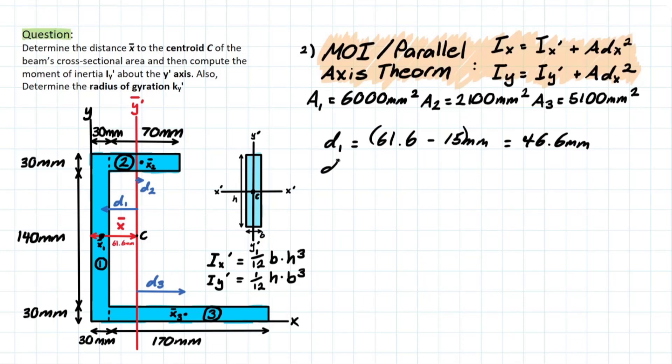It's a pretty similar process for D2 and D3. So for D2, what we're going to do is take that centroid that we calculated previously, which is 65 from Y to that point, and then subtract that distance from Y to the centroid that we found before. And this will give us 3.4 millimeters.